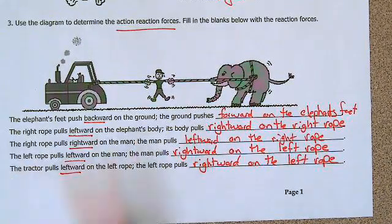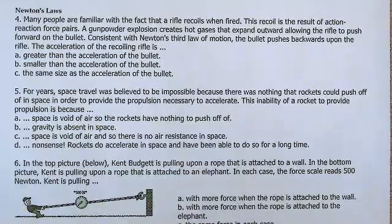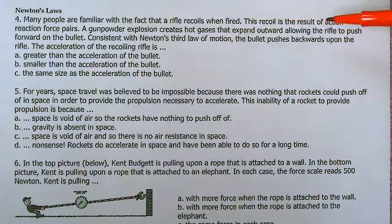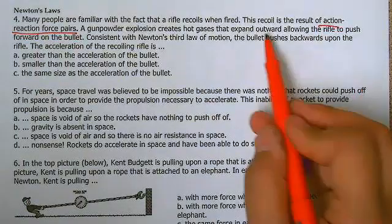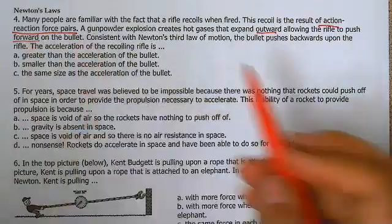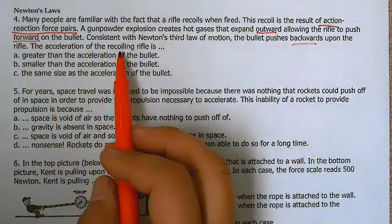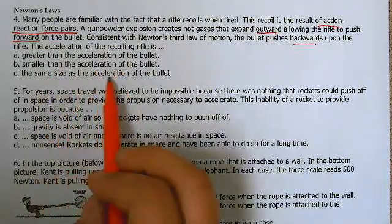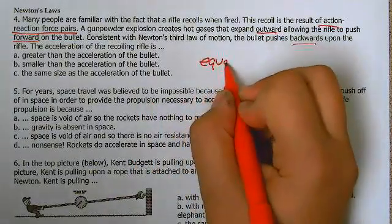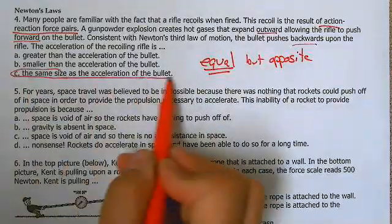We're just switching everything, just like we did for question one. Question four says: many people are familiar with the fact that rifles recoil when fired. This recoil is the result of action-reaction force pairs. A gunpowder explosion creates hot gas that expands outward, allowing the rifle to push forward on the bullet. Consistent with Newton's third law, the bullet pushes backwards on the rifle. The acceleration of the recoiling rifle is greater than, smaller than, or the same as the acceleration of the bullet? Remember, Newton's third law is equal but opposite, so the forces are the same size — we're going to choose C.